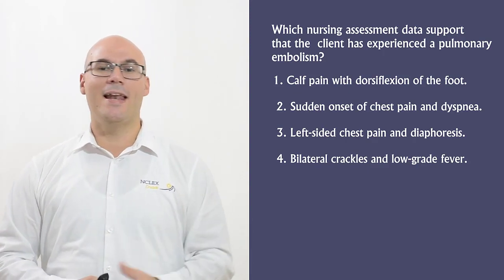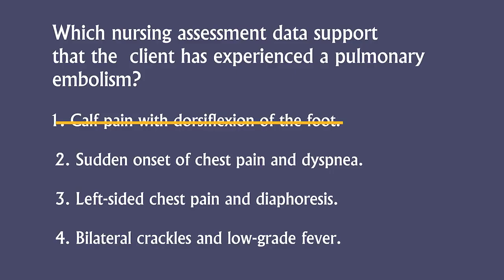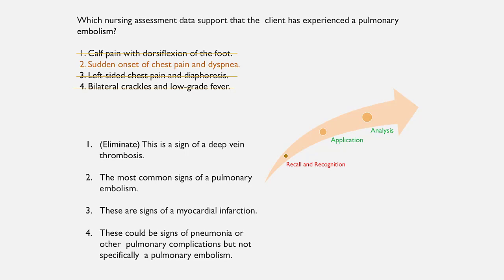Answer number one you cannot eliminate — this is a sign of deep vein thrombosis. Answer number three you can eliminate, because left-sided chest pain and diaphoresis is a sign of a myocardial infarction. Answer number four, bilateral crackles and a low-grade fever, are common signs of pneumonia or other pulmonary complications. So the sign and symptom of a pulmonary embolism is sudden onset of chest pain and dyspnea.